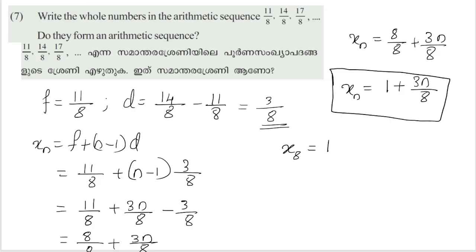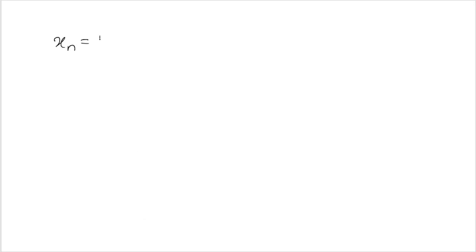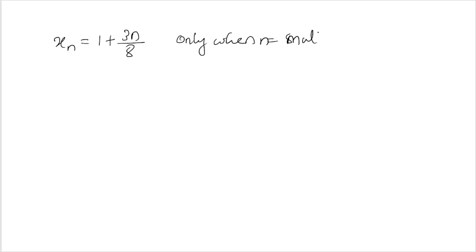So xn is equal to (1 plus 3n) by 8. This will give whole numbers only when n is equal to multiples of 8.